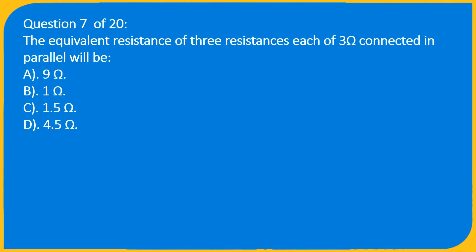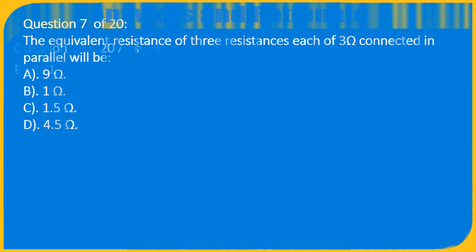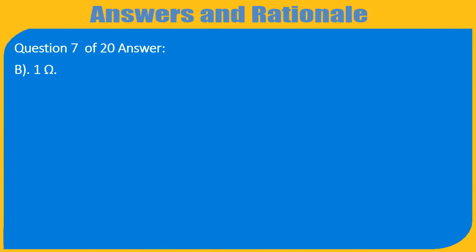Question 7 of 20: The equivalent resistance of 3 resistances each of 3 ohms connected in parallel will be: A. 9 ohms, B. 1 ohm, C. 1.5 ohms, D. 4.5 ohms. Answer: B. 1 ohm.